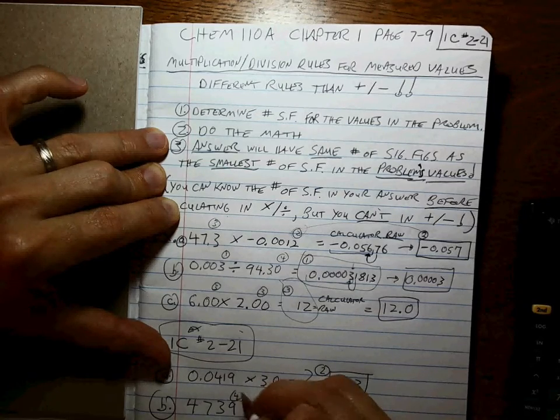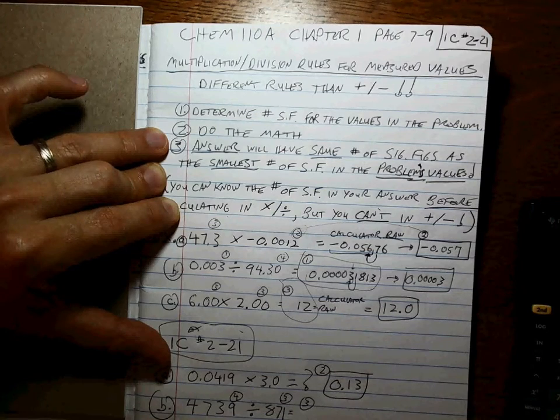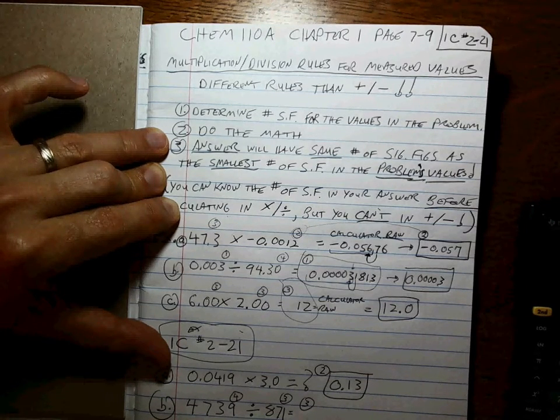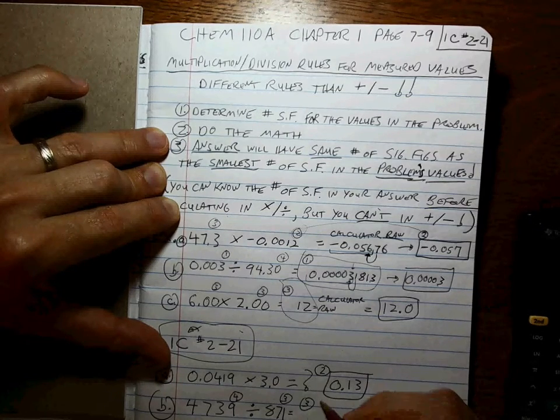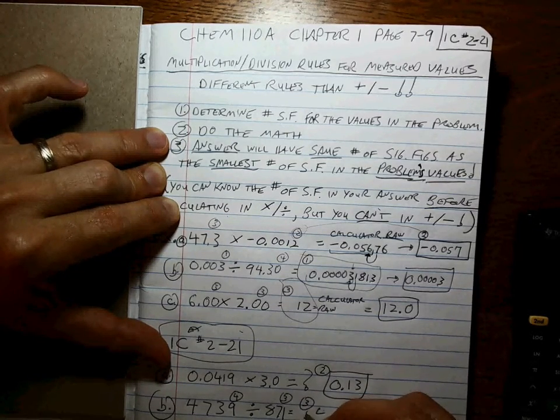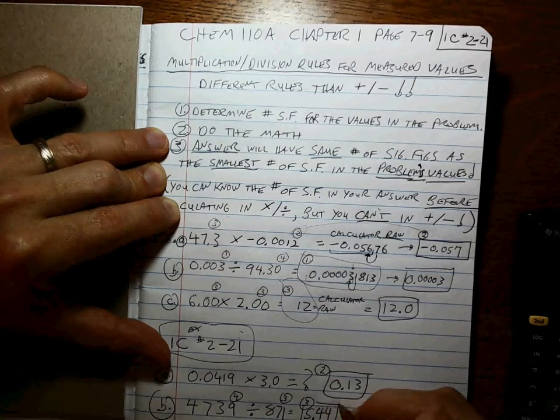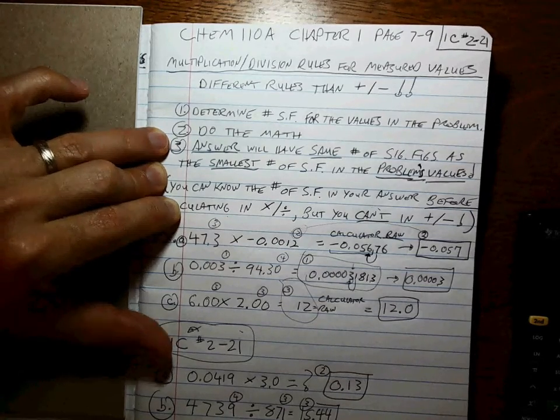This has 4 sig figs, this has 3. The final answer will have 3. So whatever 47.39 divided by 871 is: 3 sig figs, 5.44. You can see how easy this is. Just follow the directions.